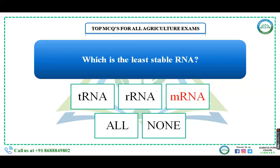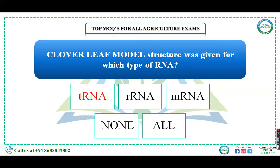The least stable RNA is mRNA, that is messenger RNA, which constitutes only 1 to 5% of the total RNA. It is produced by the genetic material DNA in the nucleus. The most complicated structure belongs to tRNA. The cloverleaf model structure was given for tRNA — however, in its actual 3D form, tRNA is a compact molecule that looks like an inverted-L shape.